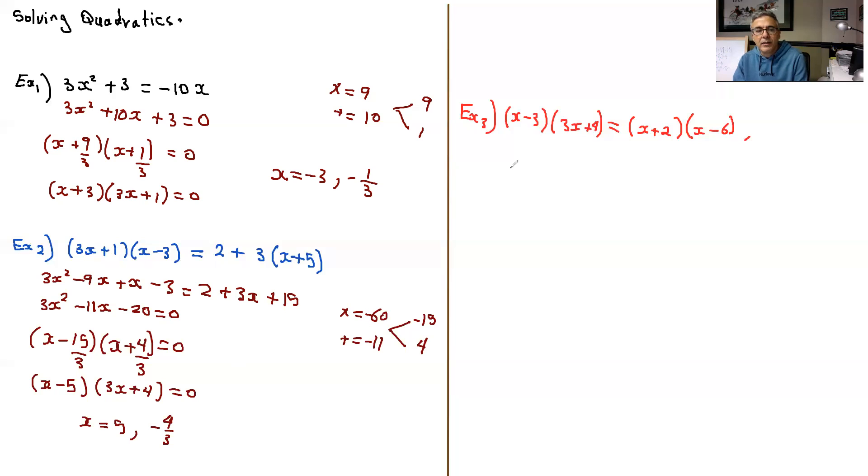This one here, similar to this. So you foil here, you're going to get 3x squared plus 4x minus 9x minus 12 equals, and this foils into x squared minus 6x plus 2x minus 12.